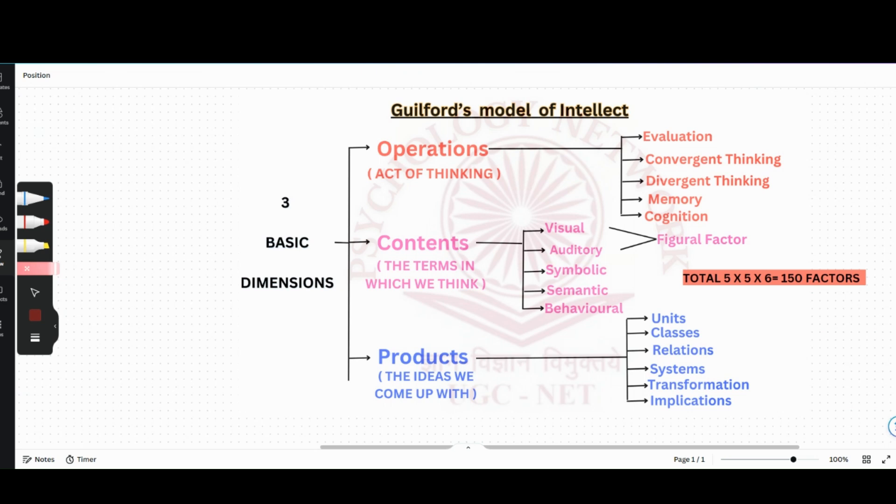Hello everyone, today we would be talking about Guilford's Model of Intellect, which was given in 1961. I would just like to talk about how this theory came into being very quickly. They were doing a lot of research studies at University of Southern California, and they conducted a lot of research studies which involved intelligence tests.